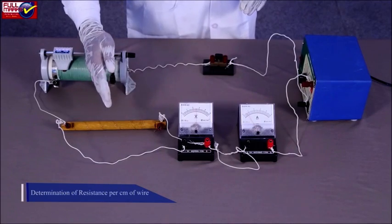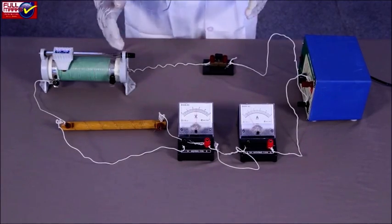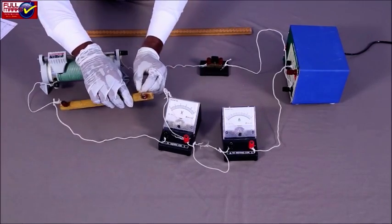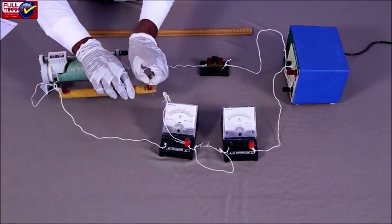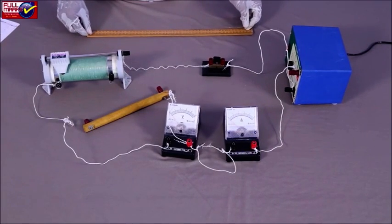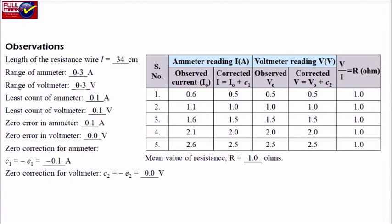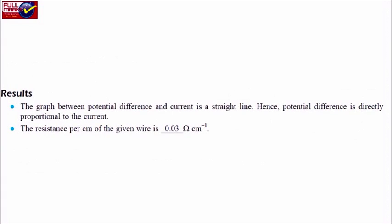Take at least 5 sets of observations. For determination of resistance per centimetre of wire, cut the resistance wire at the ends where it leaves the terminal of the voltmeter. Stretch the wire and measure its length using a meter scale. Record your observations. The graph between potential difference and current is a straight line; hence, potential difference is directly proportional to the current. The resistance per centimetre of the given wire is 0.03 Ohm per centimetre.